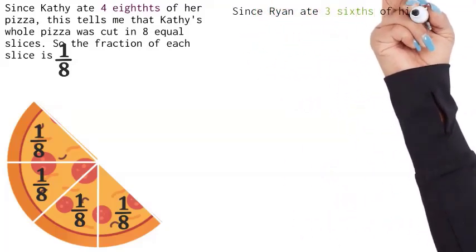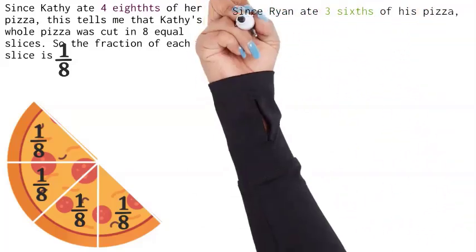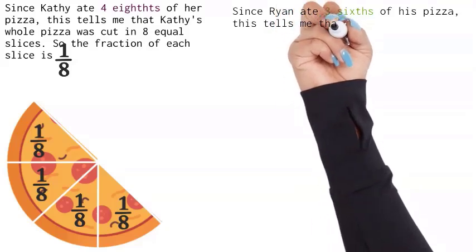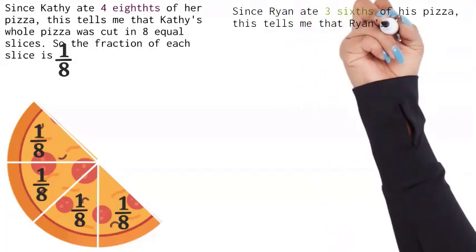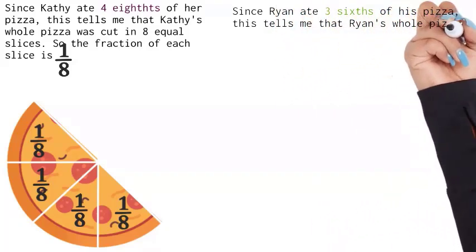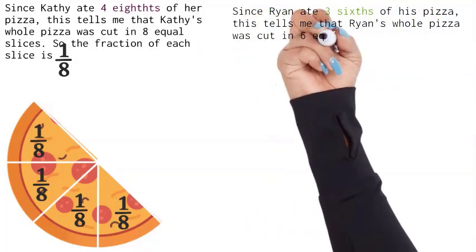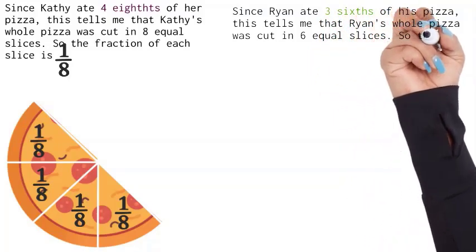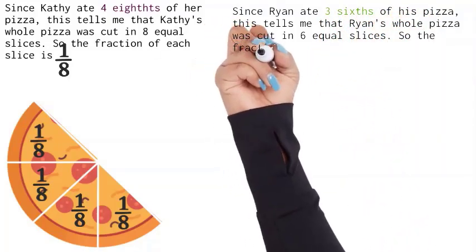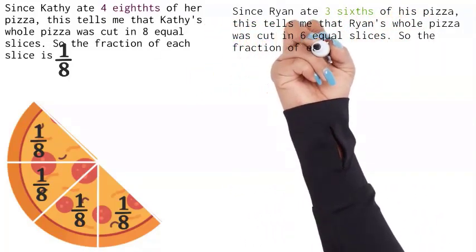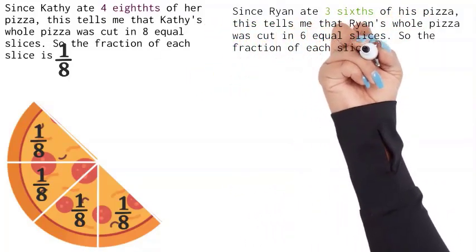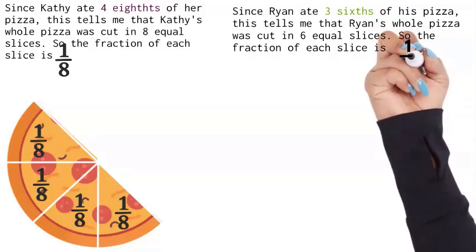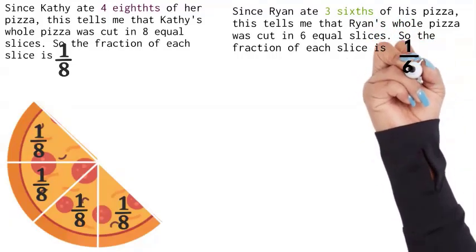Now since Ryan ate three sixths of his pizza, this tells me that Ryan's pizza must have been cut into six equal parts or six equal slices. So the fraction of each slice is one sixth.